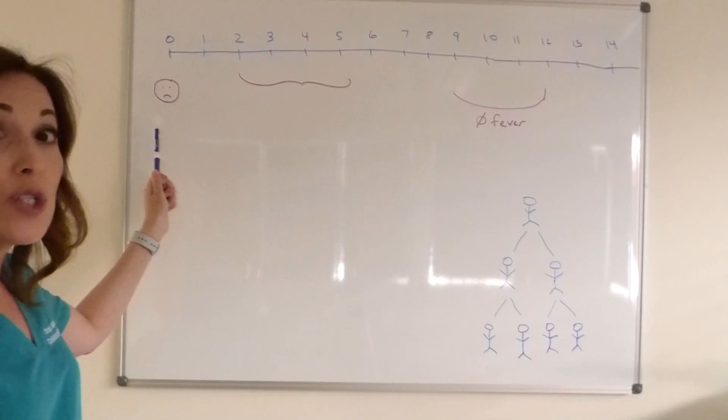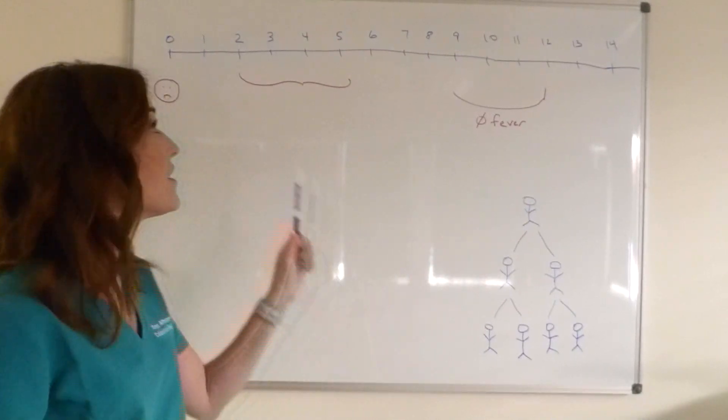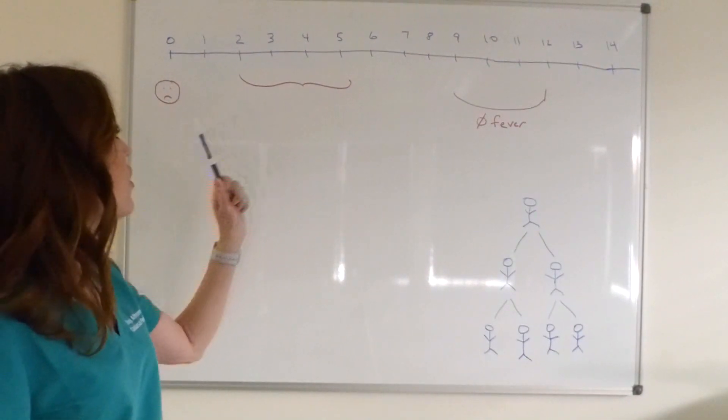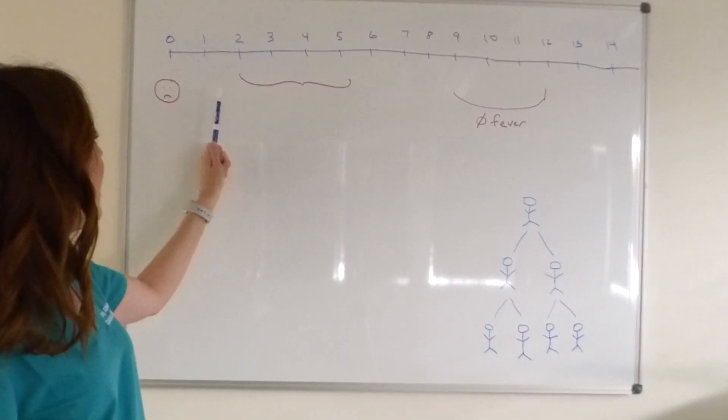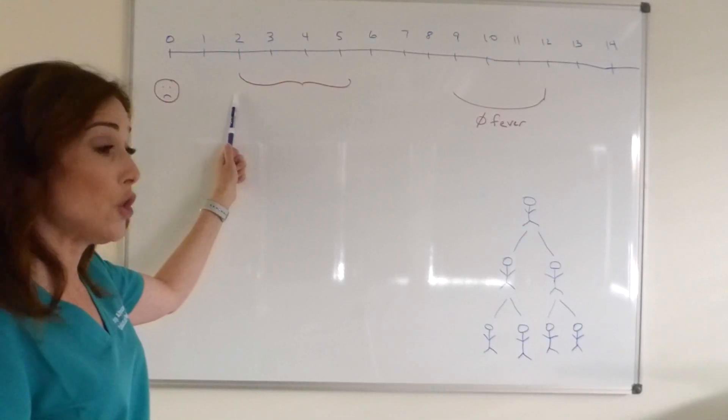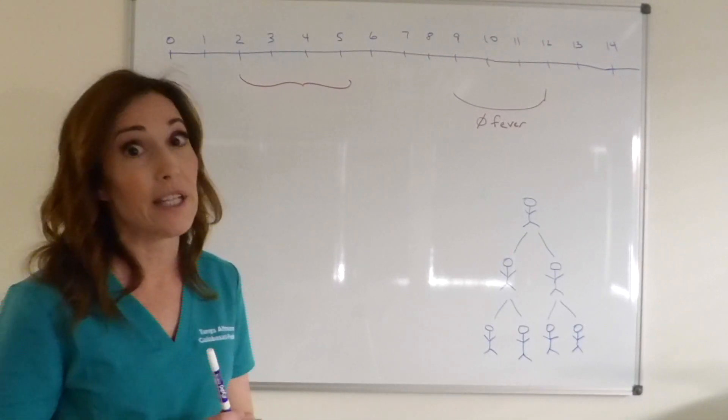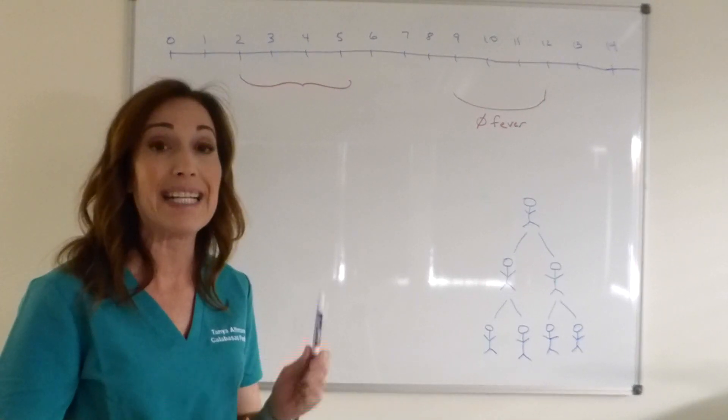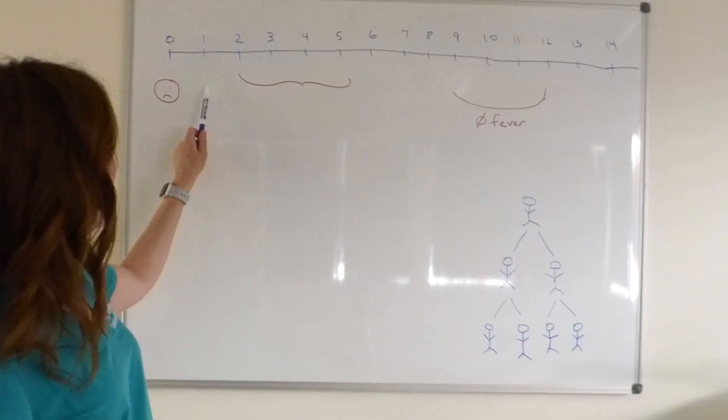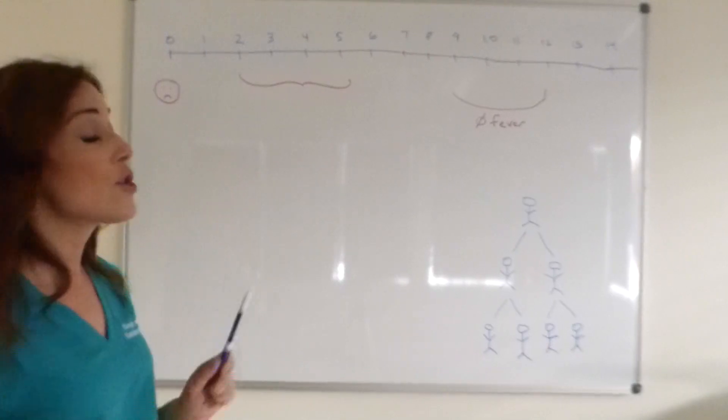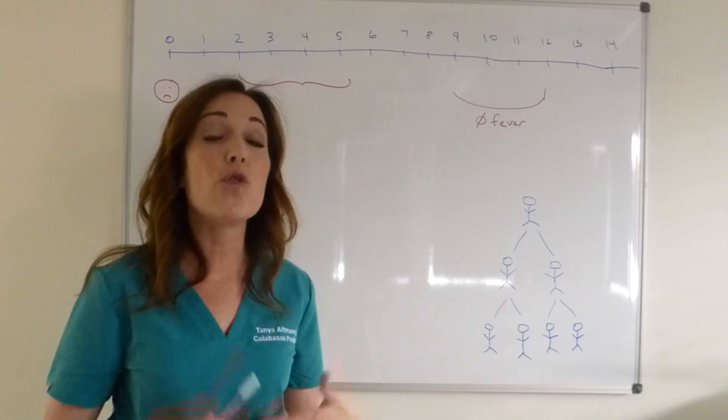So when somebody is exposed to coronavirus, it can take up to 14 days to develop symptoms, but the majority of the time it's between day two and five. So let's start here with Henry, for example. Let's say Henry wakes up in the morning on day two and mom says, Henry feels a little warm. I'm going to call school and let them know that he's not feeling well and we're going to go to the pediatrician and get tested for COVID-19. So the school then needs to be able to look at all the close contacts that Henry was in the last two days.